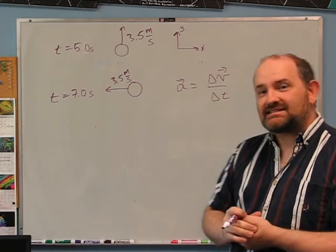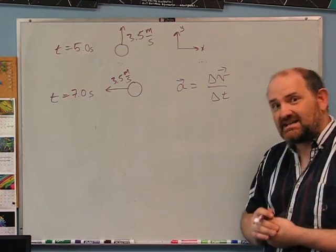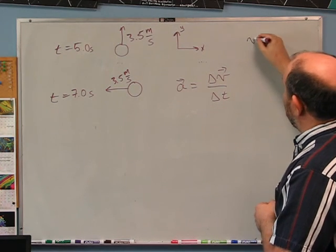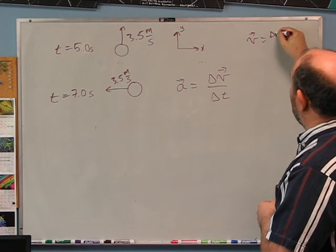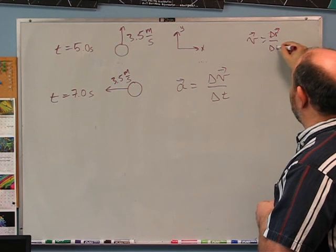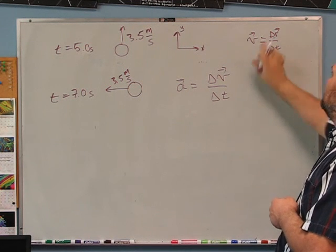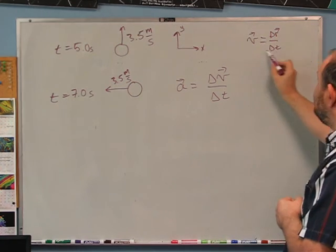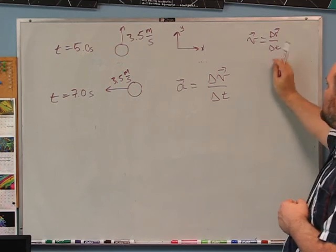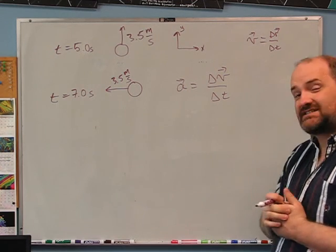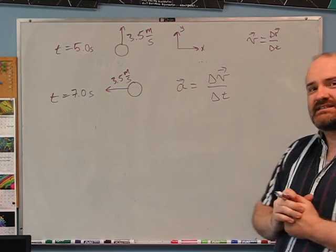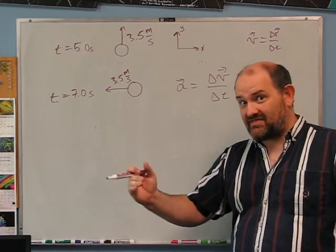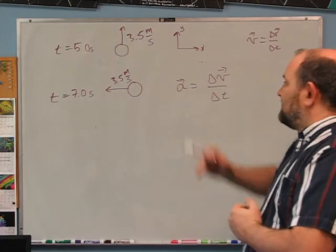It turns out you can figure out the average acceleration over any time interval using delta v over delta t — just as delta r over delta t gives the average velocity. So since I'm asking for average acceleration, I can use this equation directly over the 2-second interval.